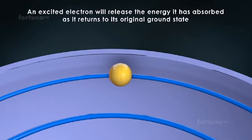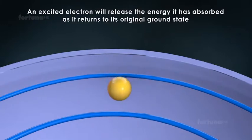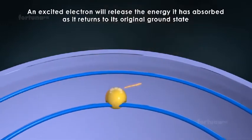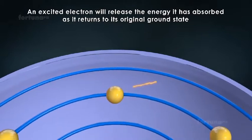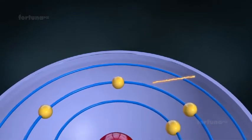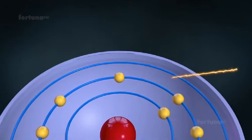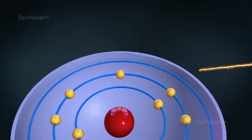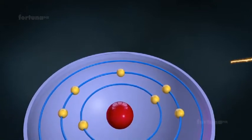An excited electron will release the energy it has absorbed as it returns to its original ground state. The energy released by electrons will be in the range of wavelengths of energy detectable by humans in visible light.